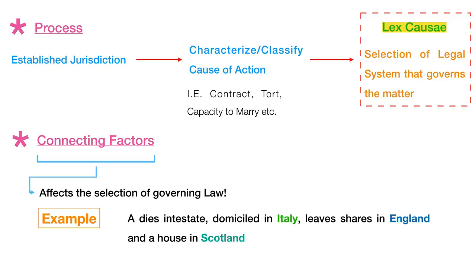At this point, we begin by understanding what amounts to lex causa, or the selection of the legal system that governs the matter. As we move on in this course, we will start looking at connecting factors — in essence, the selection of the governing law. For instance, if a person dies intestate, domiciled in Italy while leaving shares in England and a house in Scotland, what amounts to his property — the assets he has in the different jurisdictions — would depend primarily on the individual's nationality, where he is living, who his heirs are, and so on.